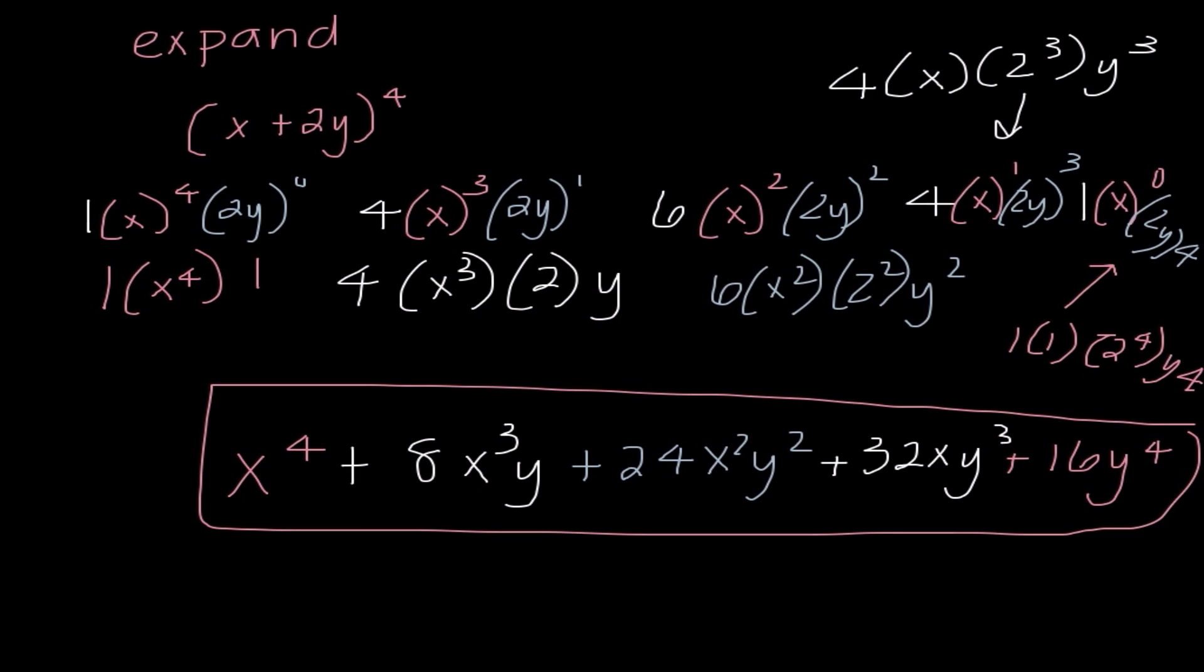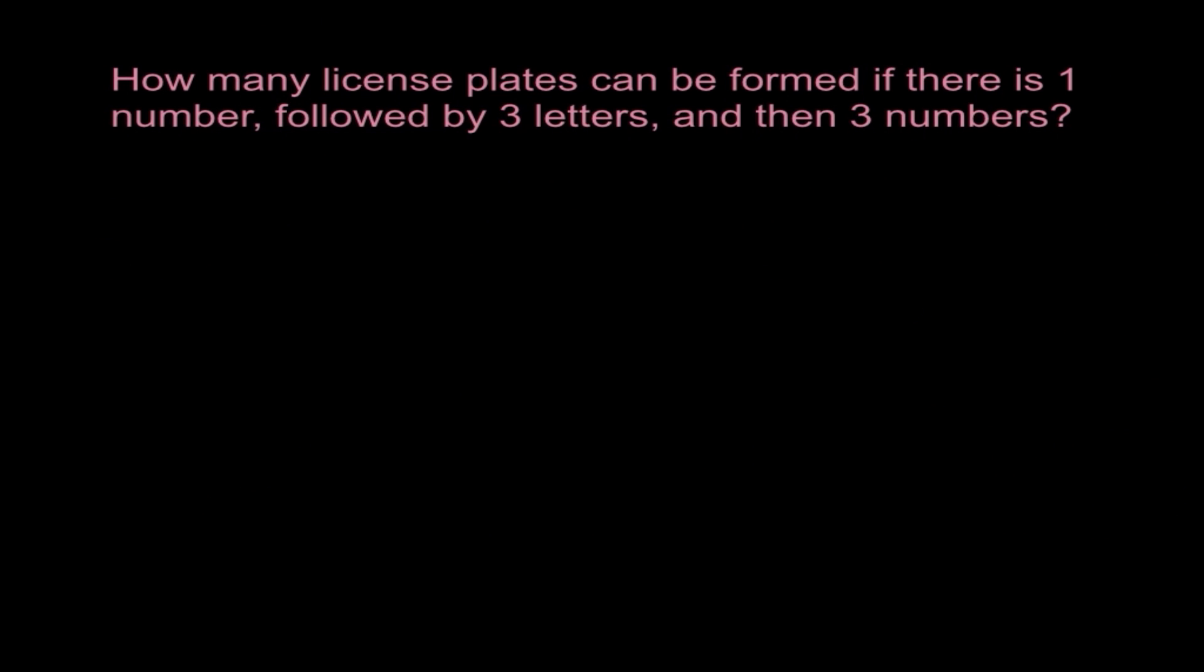So our steps in this. First thing is I needed to figure out my coefficients. Then I'm taking my first term, and I'm starting at the n power, and I'm decreasing each term. I'm looking at my second term, and I'm starting to the 0 power, and I'm increasing each term. Then I'm simply simplifying each of those terms to get our final answer.